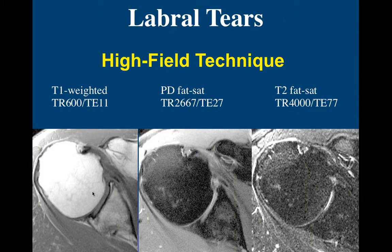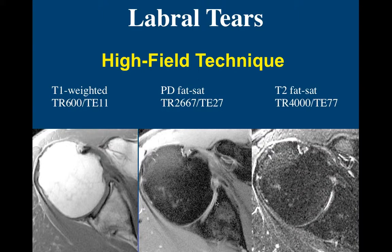On the axial images, I use a T1-weighted image and a PD fat sat. I don't like to do T2-weighted fat sat on axials because at a longer TE you lose a lot of signal and get very grainy images, especially at 1.5T. One advantage of T2-weighted is better contrast between fluid and articular cartilage, but you lose a lot of other information. I think a shorter TE lets us still see the cartilage reasonably well while seeing other structures better with less loss in signal-to-noise.